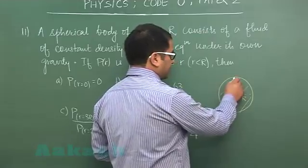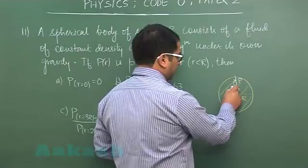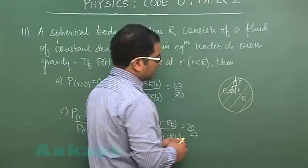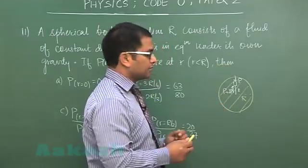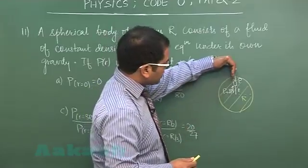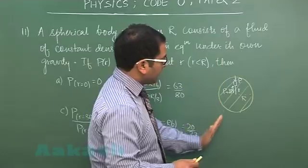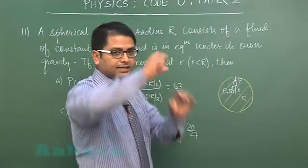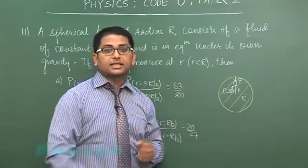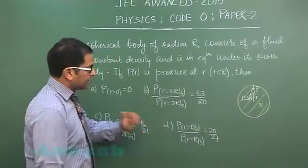For instance here for instance here the pressure would be P and here that would be P plus DP because lower you go the value of pressure would increase correspondingly. And the force of gravitation which is acting on this particular segment would be balanced by the force of pressure exerted by the rest of the element which is in contact. We need to calculate the value of pressure at different location.